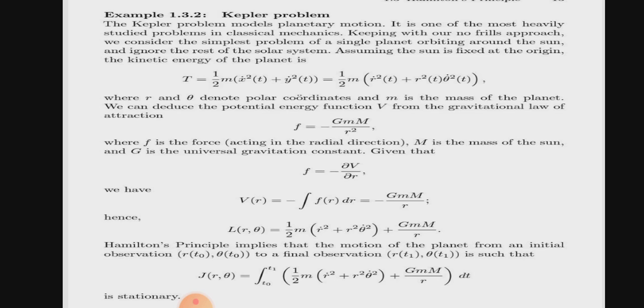Where r and theta denote polar coordinates, m is the mass of the planet. We can deduce the potential energy function V from gravitational law of attraction. What is gravitational law of attraction? We know that gravitational force is directly proportional to the product of masses and is inversely proportional to the square of the distance between them. And when we remove the proportionality, we get F equals minus G times mM over r squared, and here G is the universal gravitational constant, small m is the mass of planet, capital M is the mass of sun, and r is the distance between them, which is gravitational force.